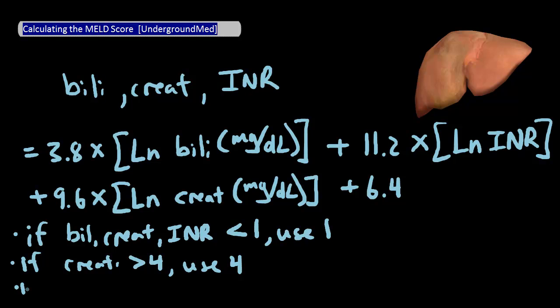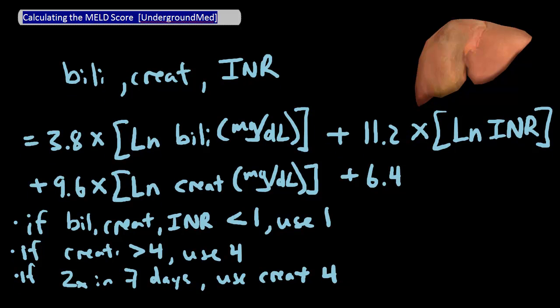Lastly, if the patient is on active dialysis, meaning had dialysis twice in the last 7 days, use a creatinine value of 4 for the equation instead of the patient's actual creatinine level.